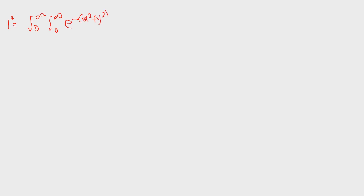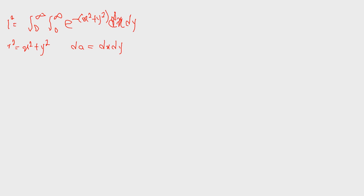So I squared is the double integral of e raised to the power of minus (x squared plus y squared), dx dy. Now we are going to convert from rectangular to polar coordinates. In rectangular coordinates, r squared equals x squared plus y squared, and the area element dA equals dx dy. In polar coordinates, dA equals r dr dθ.